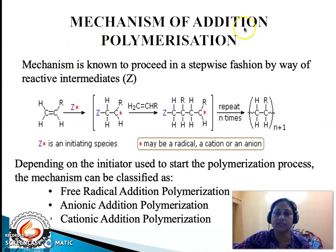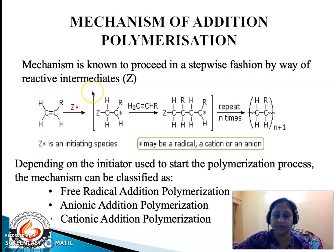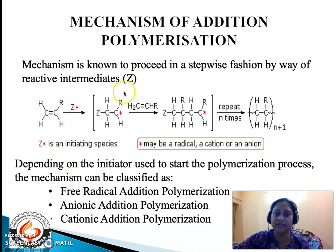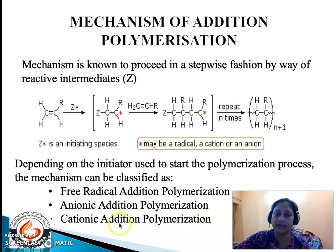The mechanism of addition polymerization is known to proceed in a stepwise fashion by way of reactive intermediates. Reactive intermediates are species that are very unstable and they initiate the process of polymerization. There are three classes of reactive intermediates: the free radical, the carbocation, and the carbanion. Depending upon the nature of the reactive intermediate, addition polymerization is classified as free radical, anionic or carbanionic, and cationic or carbocation addition polymerization.